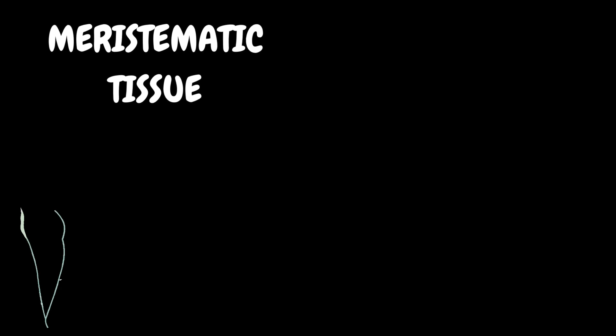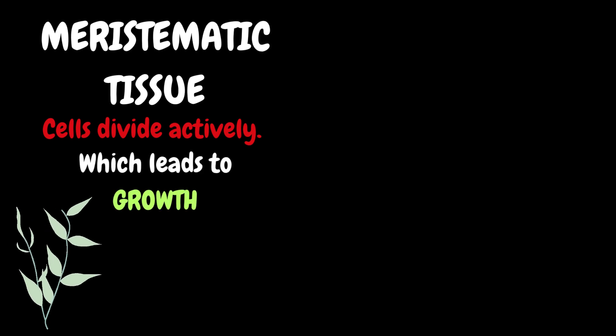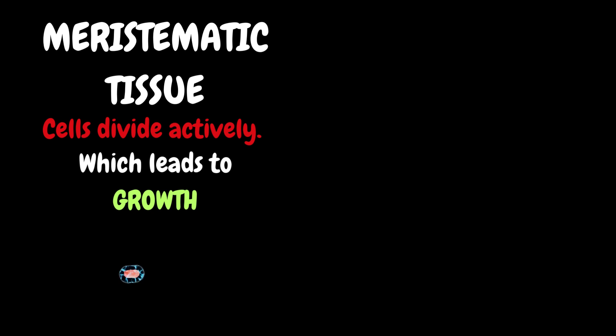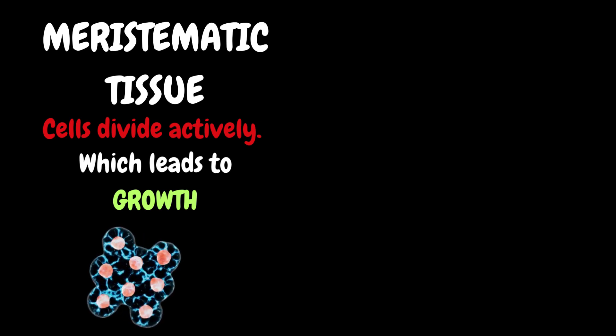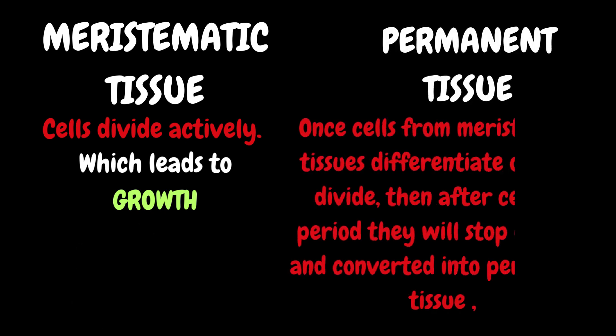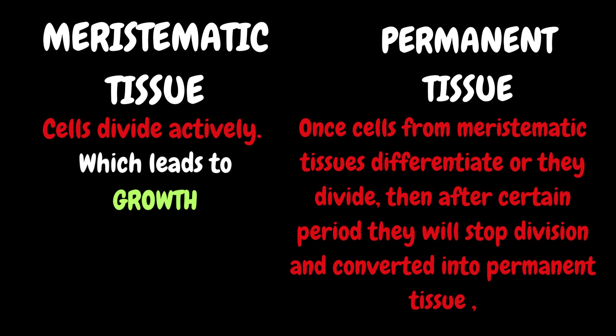In the case of meristematic tissues, they are actively dividing cells. This means that for a certain period the plant will grow to attain specific growth. As earlier we have discussed, cells undergo continuous divisions — that is growth. So that's why meristematic tissues, which are present as part of the plant, will continue to grow until desired growth is complete. On the opposite side, in case of permanent tissues, once cells from meristematic tissues differentiate or they divide, then after a certain period they stop dividing.